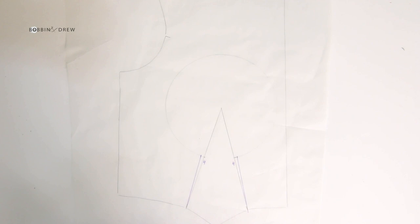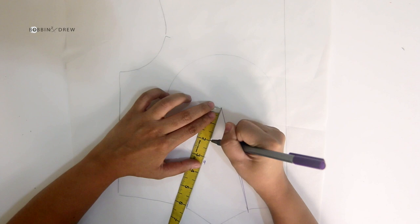To shape the upper portion of the dart, mark two inches from the bust point and blend it to the contour guide number four.